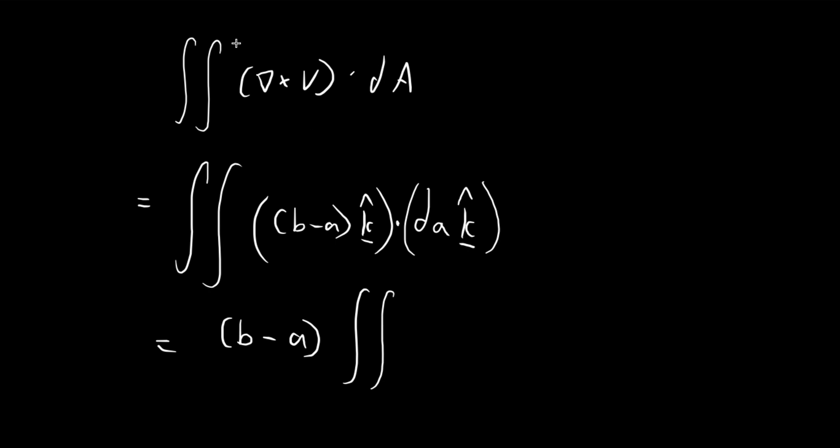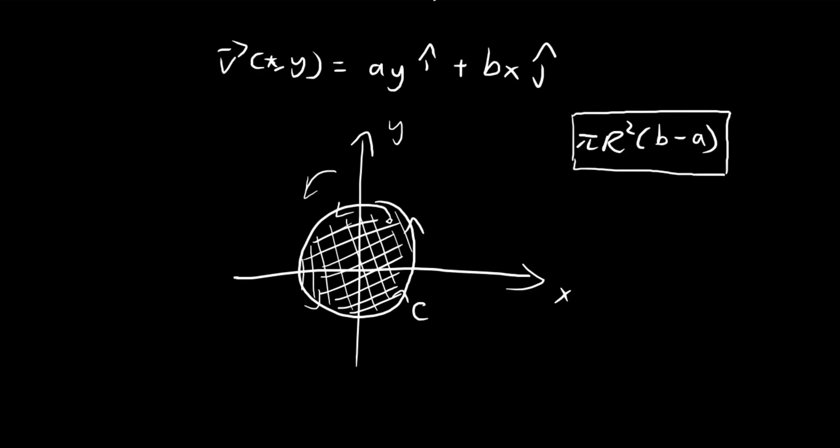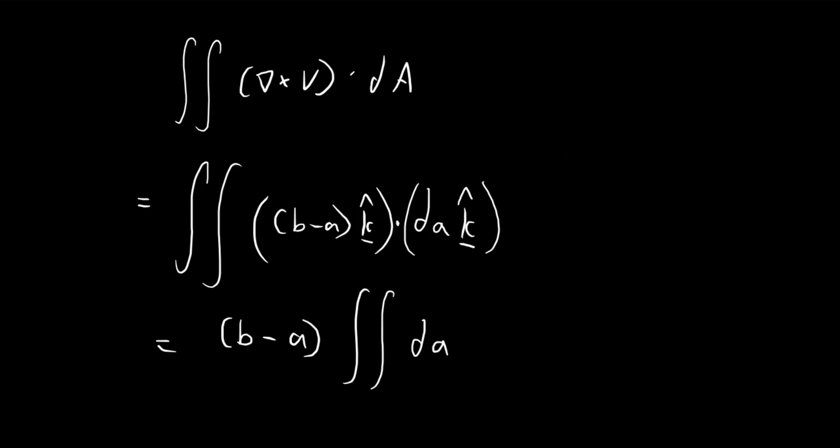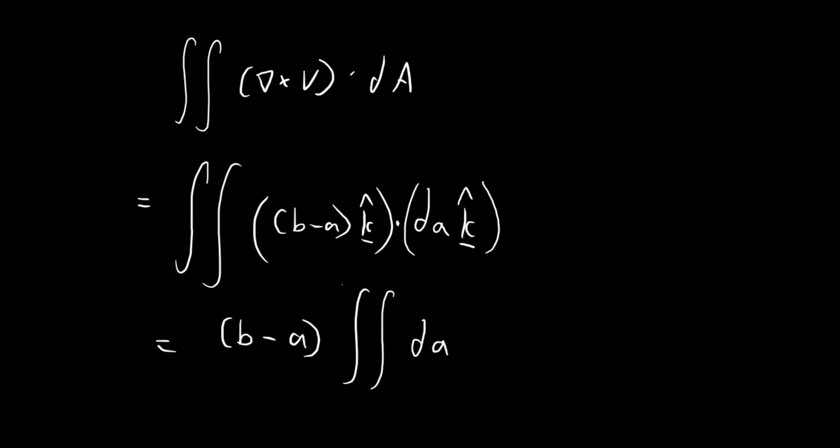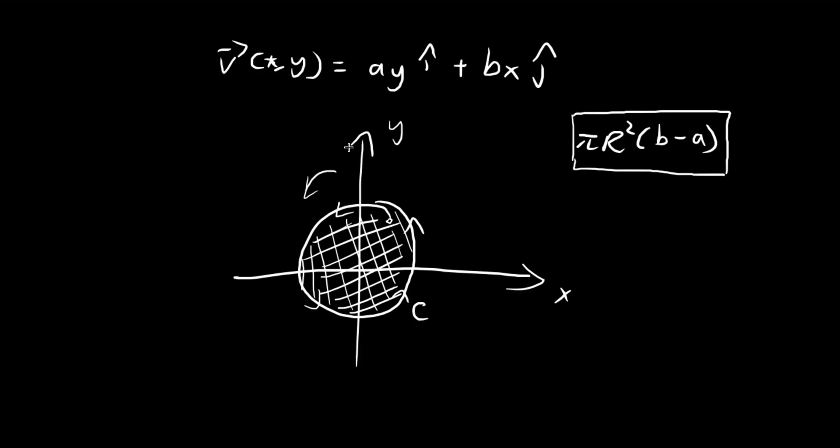So in the end, your double integral will turn into this constant, B minus A, multiplied by the double integral over this entire surface. So what you're doing literally is cutting up the surface and then adding up the tiny pieces back together. So this entire integral over here, by definition, is just going to be equal to the area of this region, this circular region that we're integrating across.